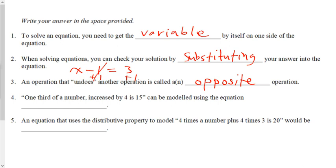Question 4, one-third of a number increased by 4 is 15 can be modeled using this equation. So one-third of a number will be represented by taking that number x and dividing it by 3. And increased by 4 means we're going to add 4 to it. And is, it's a fancy word for equals, 15. So the equation that that sentence represents is x/3 plus 4 is equal to 15.